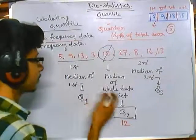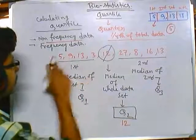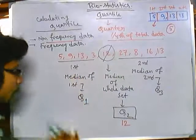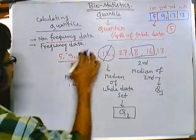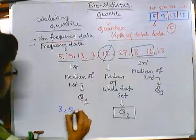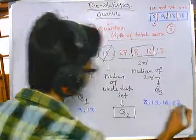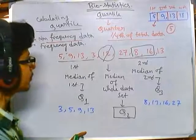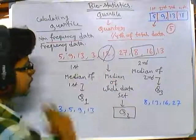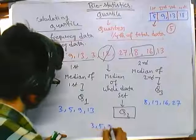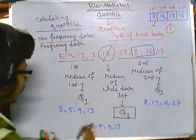Now let's look at the Q1 and Q3 calculations. First, the important step is to arrange the data in sequential order from lowest to highest. So we arrange: 3, 5, 8, 9, 12, 13, 13, 16, 27. The middle value is 12, confirming Q2 = 12. The first group is 3, 5, 9, 13 and the second group is 8, 13, 16, 27.